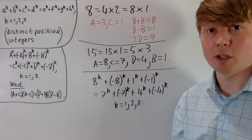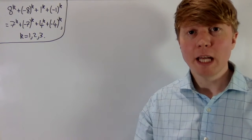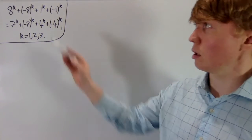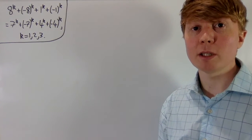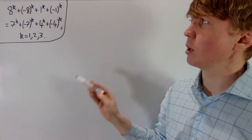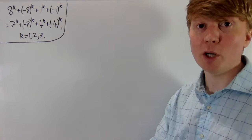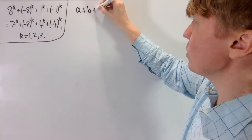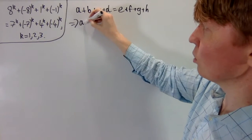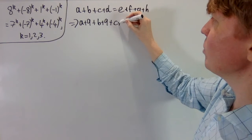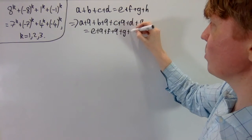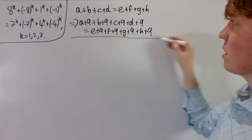There's a simple trick: add a constant to each integer. This preserves all the properties. Since −8 is our smallest number, we add 9 to all of them. It's easy to see that when a+b+c+d = e+f+g+h, adding 9 to everything gives (a+9)+(b+9)+(c+9)+(d+9) = (e+9)+(f+9)+(g+9)+(h+9), since we've just added 36 to both sides.